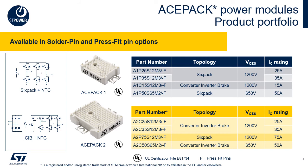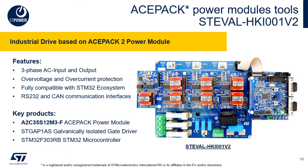ASPEC power modules are available in two different topologies: six-pack and converter-inverter-brake. Both packages, ASPEC 1 and ASPEC 2, are UL certified. In order to evaluate ST products using our software development ecosystem, we are offering evaluation boards for every product in the ST portfolio. This evaluation board features all the functions of a motor drive based on the 1200 volt 35 ampere ASPEC module, with 3-phase input rectifier, 3-phase inverter output, and a brake chopper, driven by the galvanic isolated gate driver STGAP1 and controlled by a STM32F303 microcontroller.